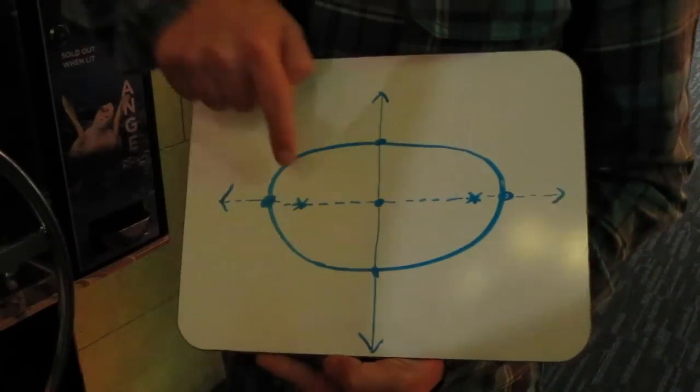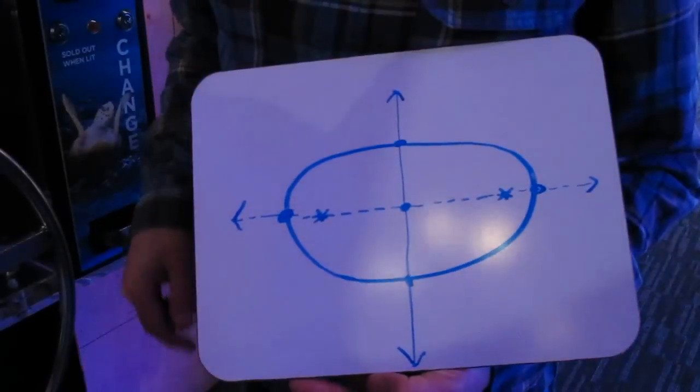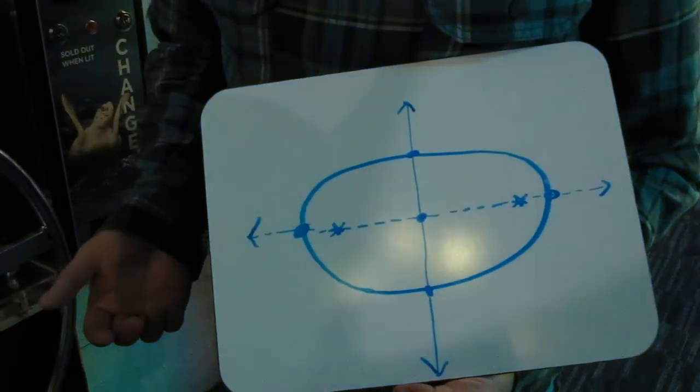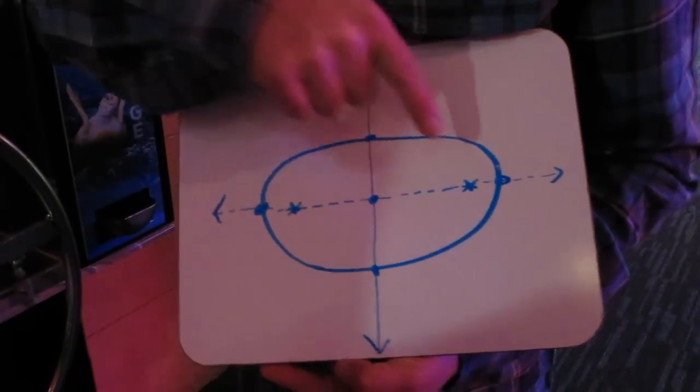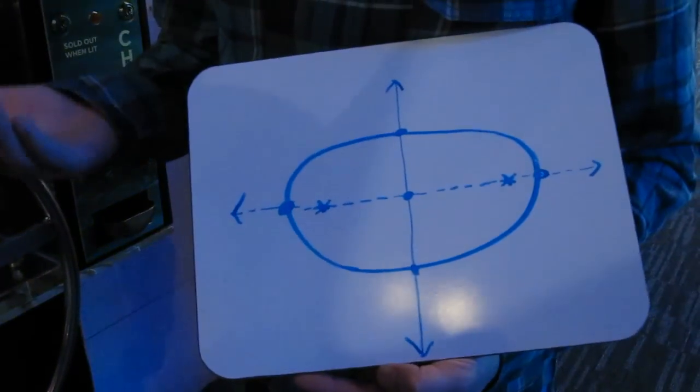Finally, these little stars represent the foci. Or if we call them individually, this is a focus, and this is a focus. Together, they're foci.